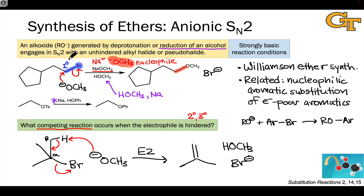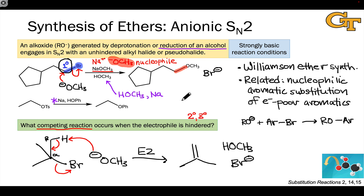So watch out for this: the electrophile must be primary for the Williamson ether synthesis to work. When you're working backwards from an ether that you want to make back to the starting materials, make sure to disconnect the bonds between primary carbons and the ether oxygen. Avoid disconnecting a bond to a secondary or tertiary carbon when thinking about the Williamson ether synthesis — we can't use that bond using a Williamson.